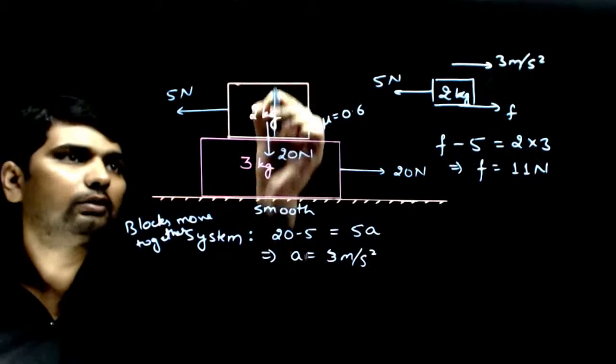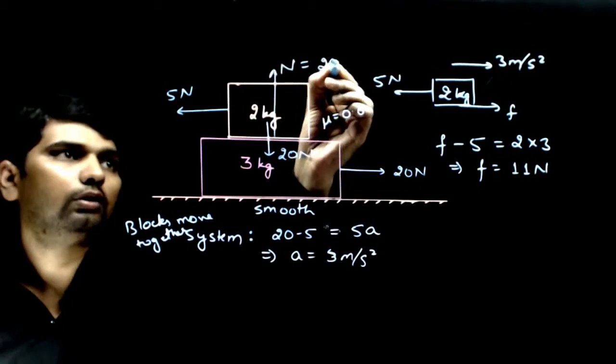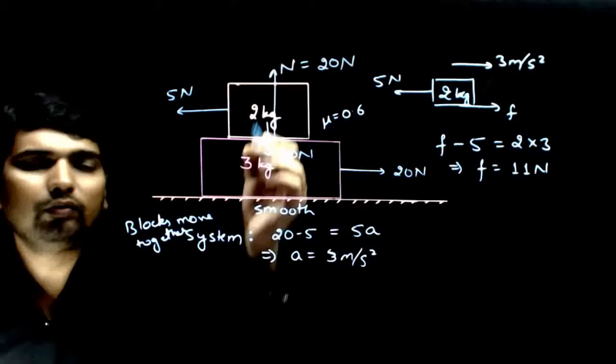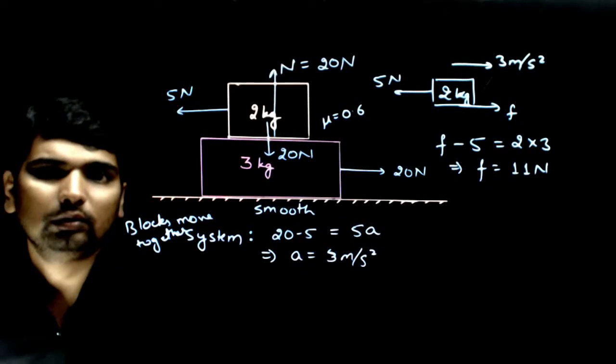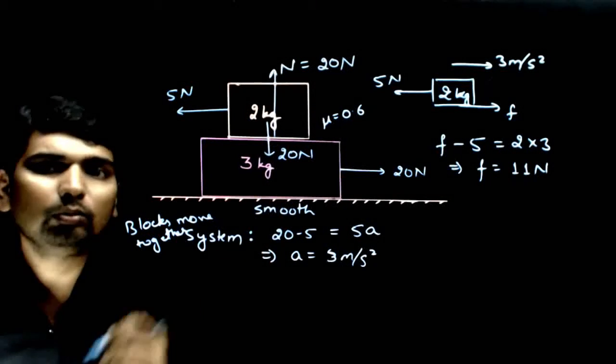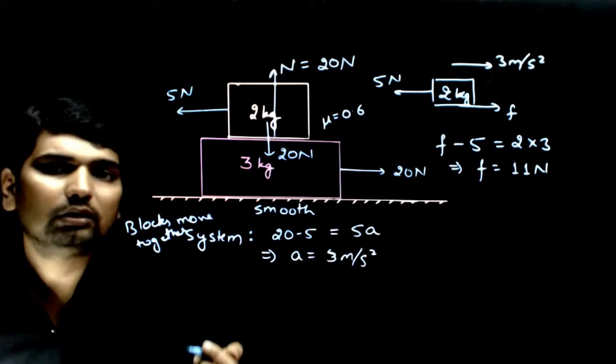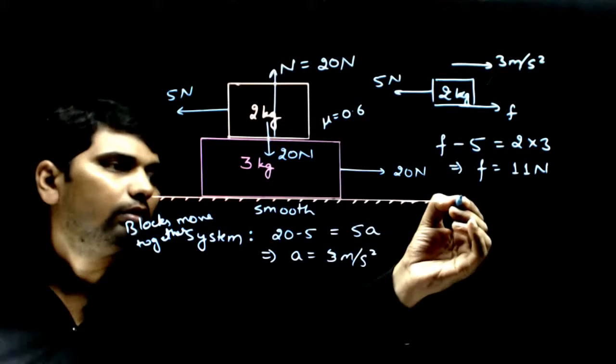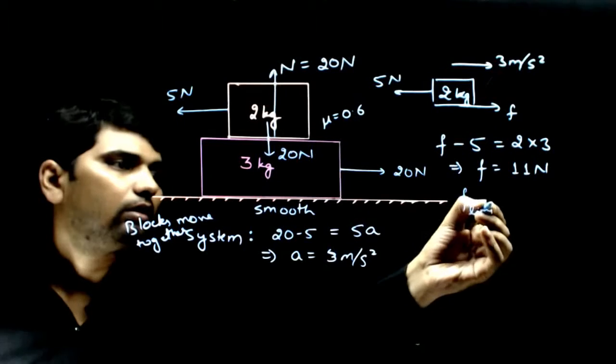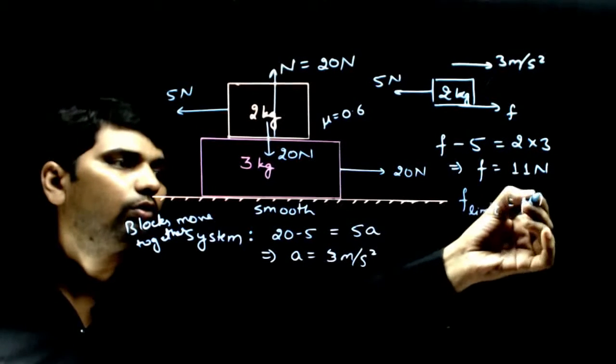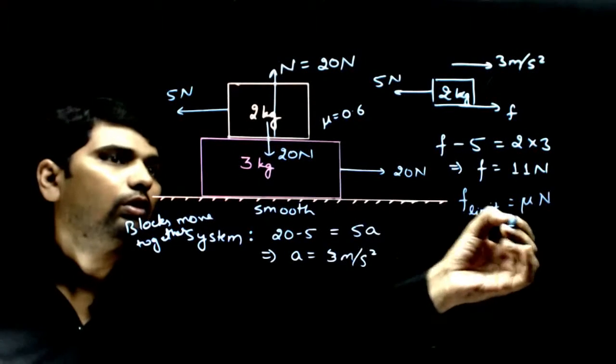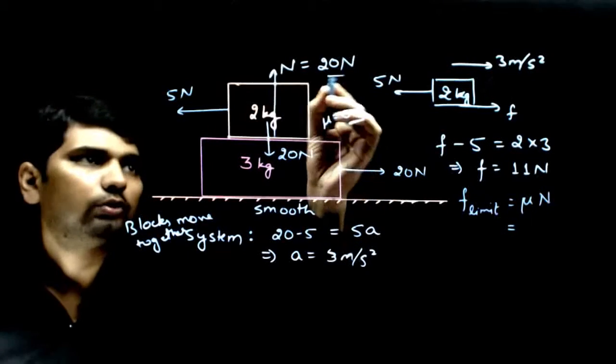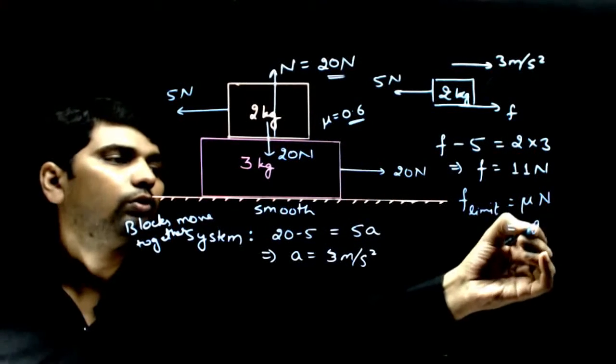This will be balanced by normal force, that is also equal to 20 Newton. The normal force between 2 blocks is 20 Newton, and if the normal force between 2 blocks is 20 Newton, that means limiting friction is mu into normal, that equals mu is 0.6, normal is 20, so it equals 12 Newton.